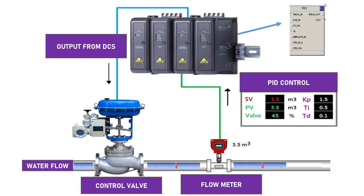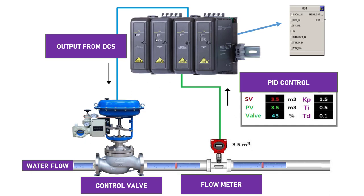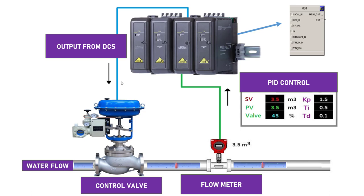Inside the controller, you write a PID block to control this control valve. Based on the program written inside the Delta VDCS controller, the PID output would be connected to your control valve. Based on that output, you decide how much the valve should open or close based on the flow requirement.